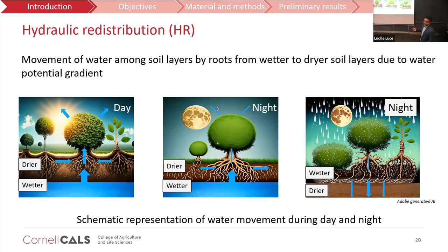During daytime, transpiration water demand is very high, leading to a very significant water potential gradient from ground to leaf level, and water moves from ground to leaf. But during nighttime, transpiration demand is less, and in the dry soil layer the water potential becomes very negative compared to the wet region. Plant roots take water from the wet region and translocate it to the drier region. In the rainy season, water in the surface layer becomes much wetter than the deep soil layer, and during nighttime plant roots take water from the surface down to the drier region.